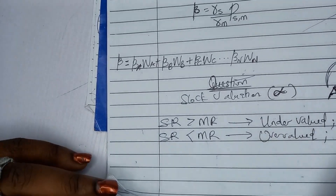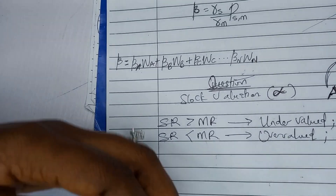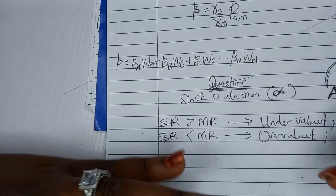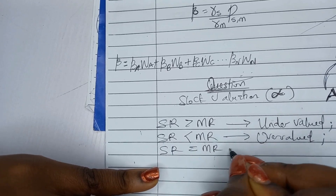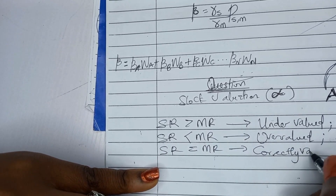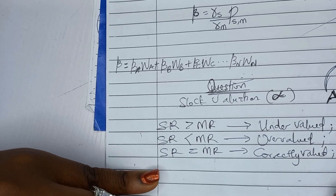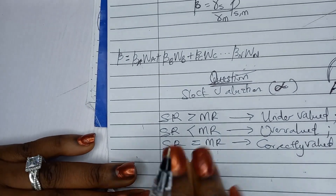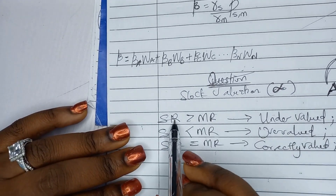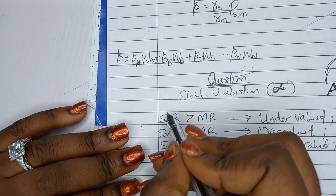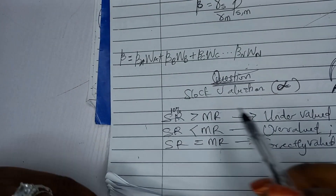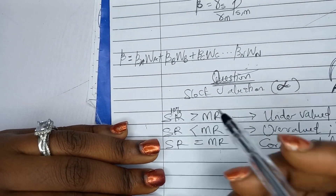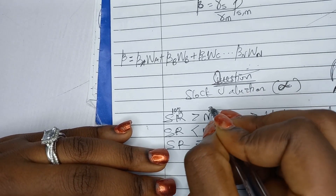The rules are: if the stock return is greater than the market return, the stock is undervalued — your decision is to buy. If the stock return is less than the market return, the stock is overvalued — your decision is to sell. If the stock return equals the market return, the stock is correctly valued — you hold.